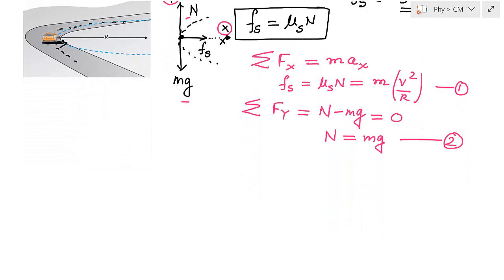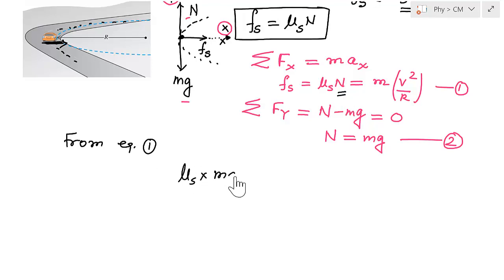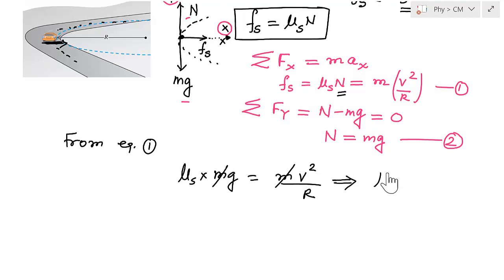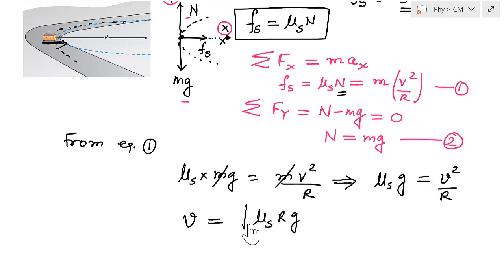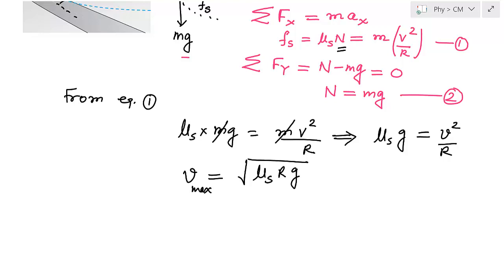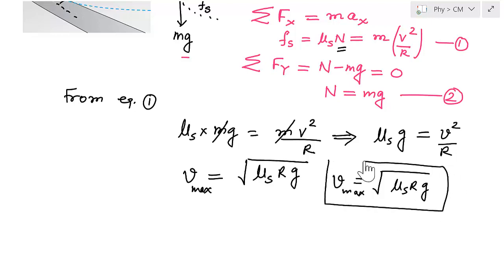Substituting equation 2 into equation 1: μs·Mg = m·v² / r. The mass m cancels, giving v² = μs·r·g. Therefore, the maximum velocity is V_max = √(μs·r·g). This is the maximum speed at which the driver can take the curve without sliding.